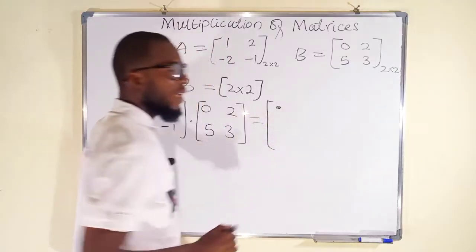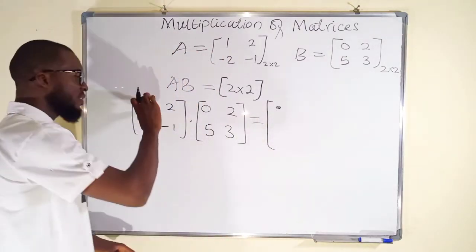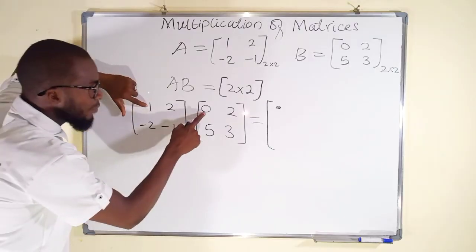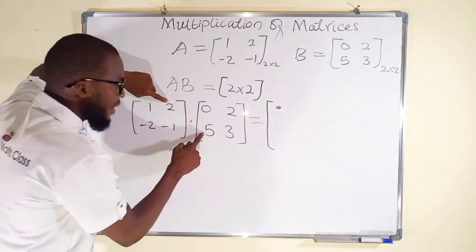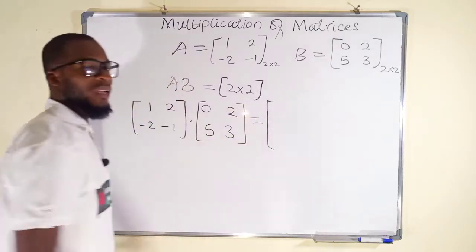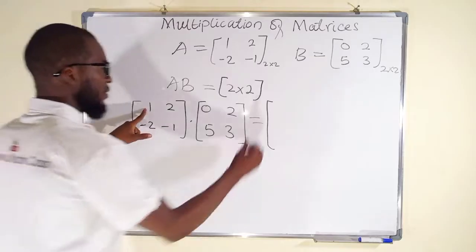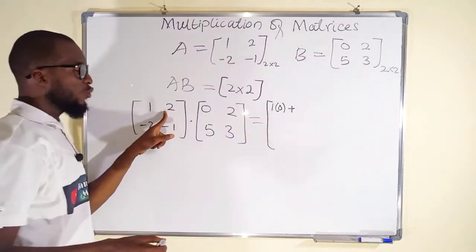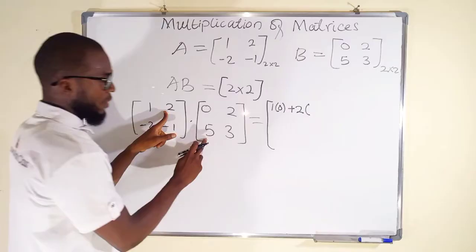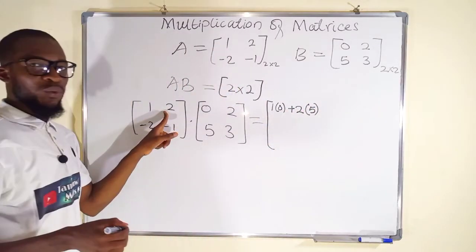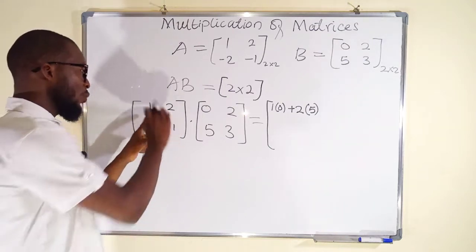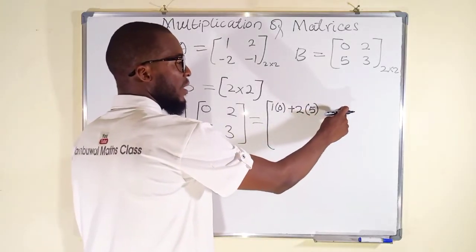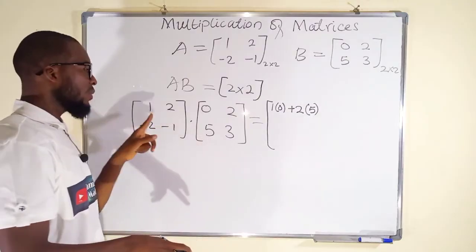To obtain the element at position (1,1), we take the first row and multiply by the first column: 1 multiplied by 0, then add -2 multiplied by 5. For position (1,2), we take the same first row and multiply by the second column: 1 times 2 plus -2 times 3.